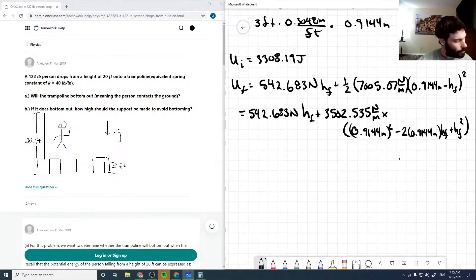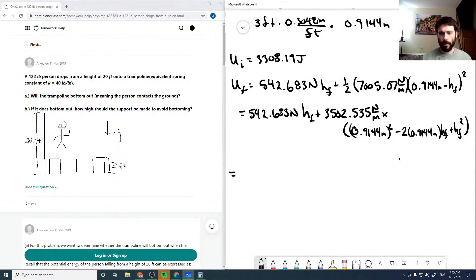And so working this all through, and rearranging things to look more like a quadratic equation, we get 3201.8036 newton meters minus 5862.753 times hf plus 3502.535 newtons per meter times hf squared.